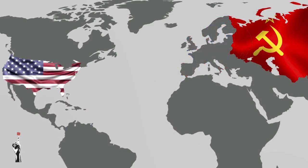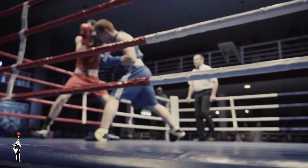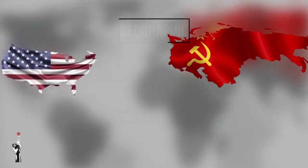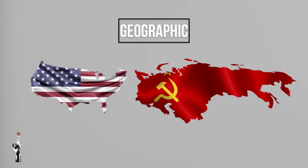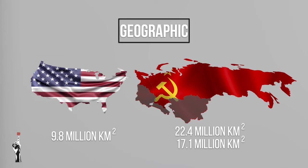Let's end off this lesson by comparing the two superpowers, America and the USSR, as if it would be a boxing match between two heavyweights — remember we're talking about these countries during the Cold War, not their current state. Geographically, the Soviet Union was the biggest country in the world, measuring an area of 22.4 million square kilometers, of which Russia was 17.1 million kilometers, compared to America, the fourth biggest country in the world with an area of 9.8 million square kilometers.